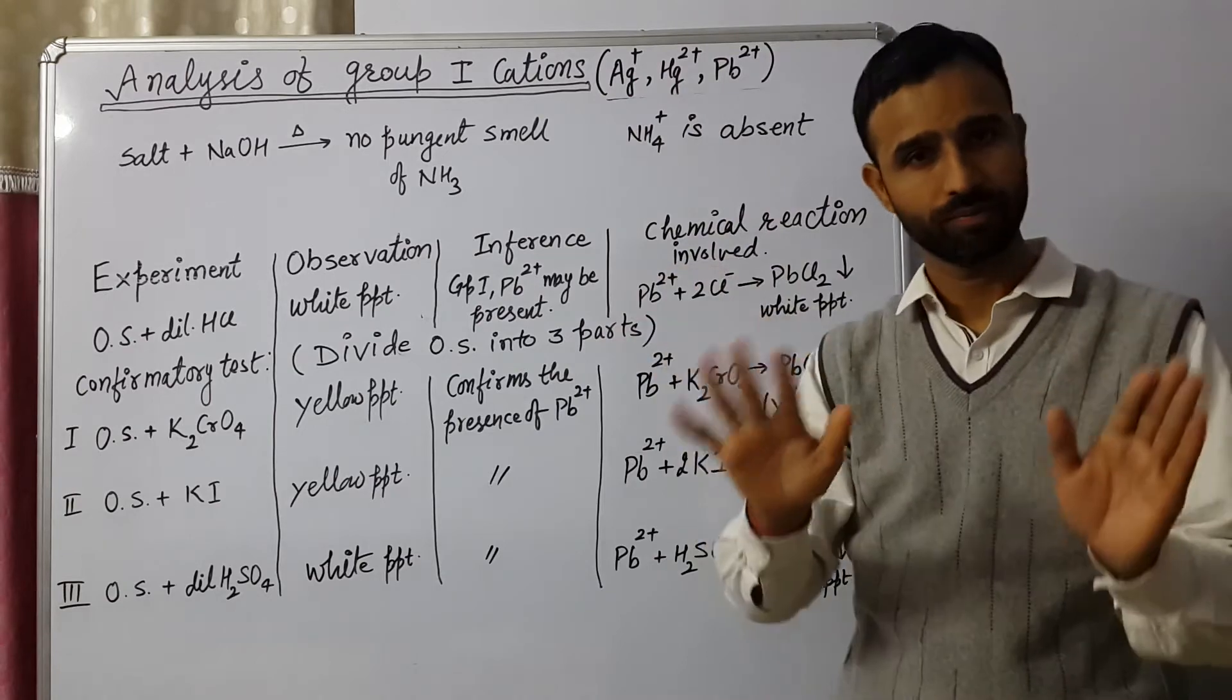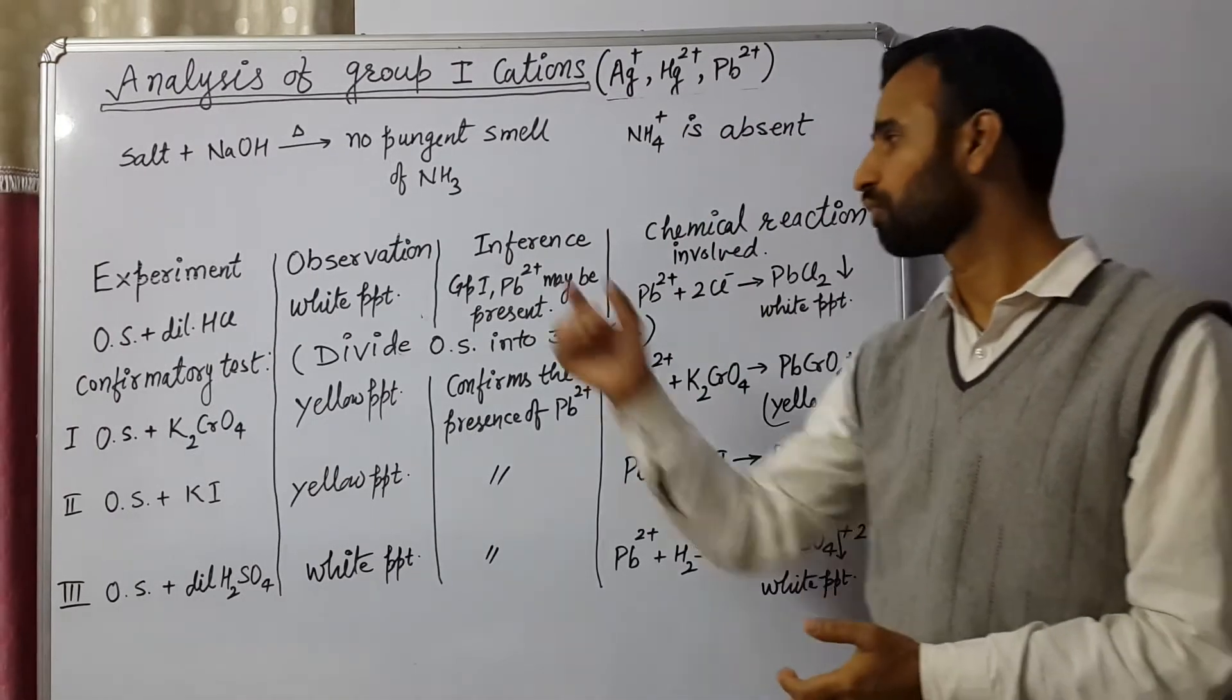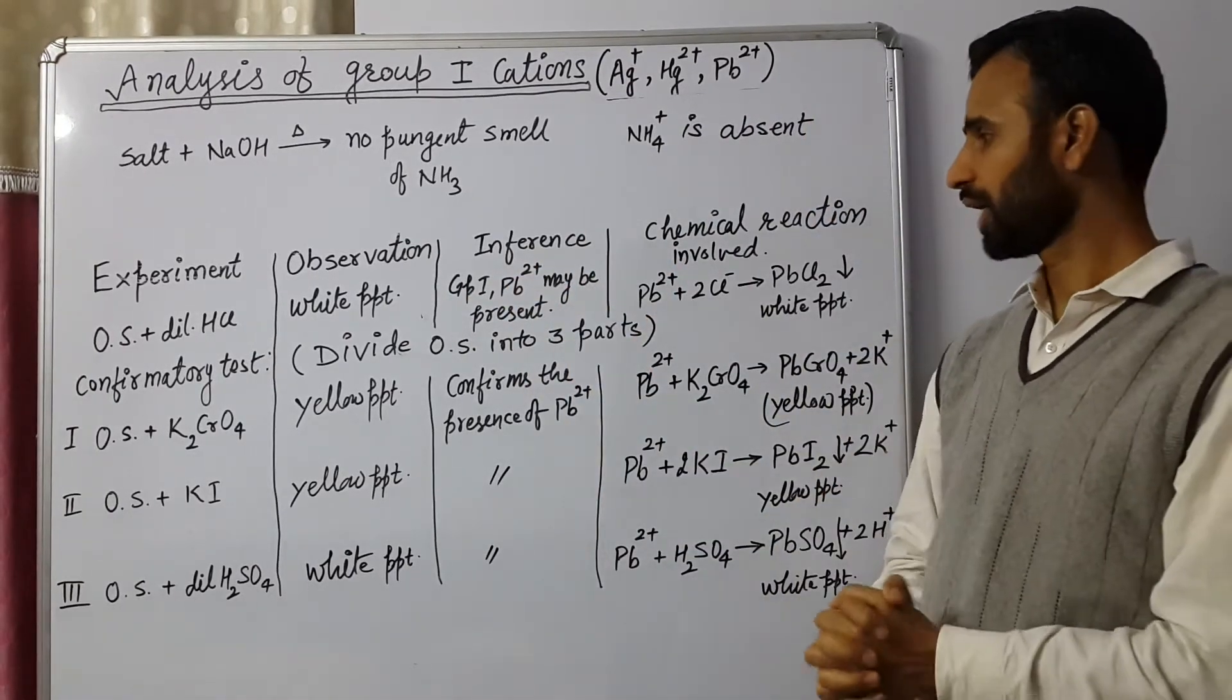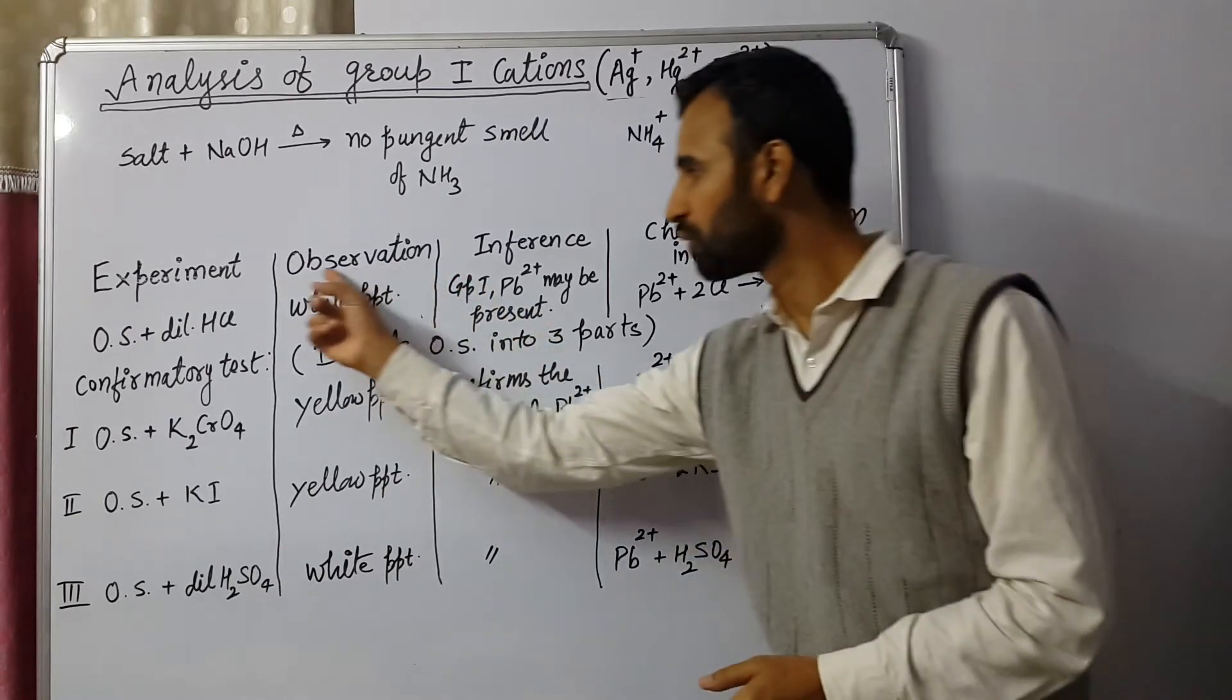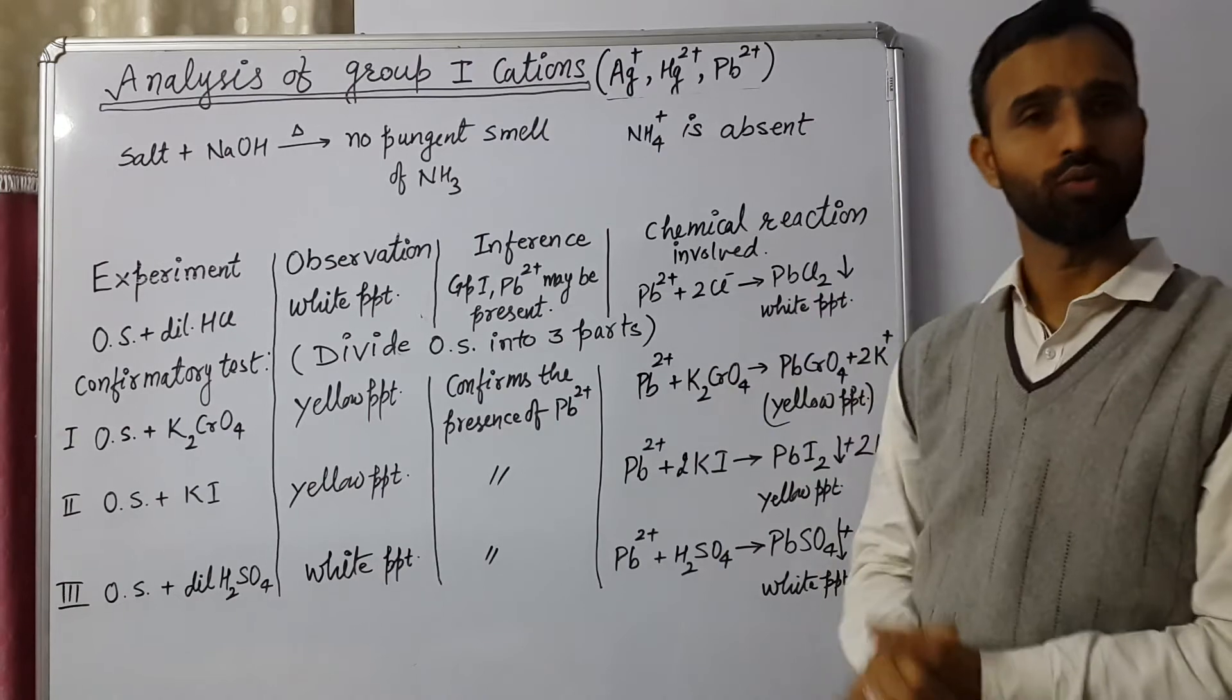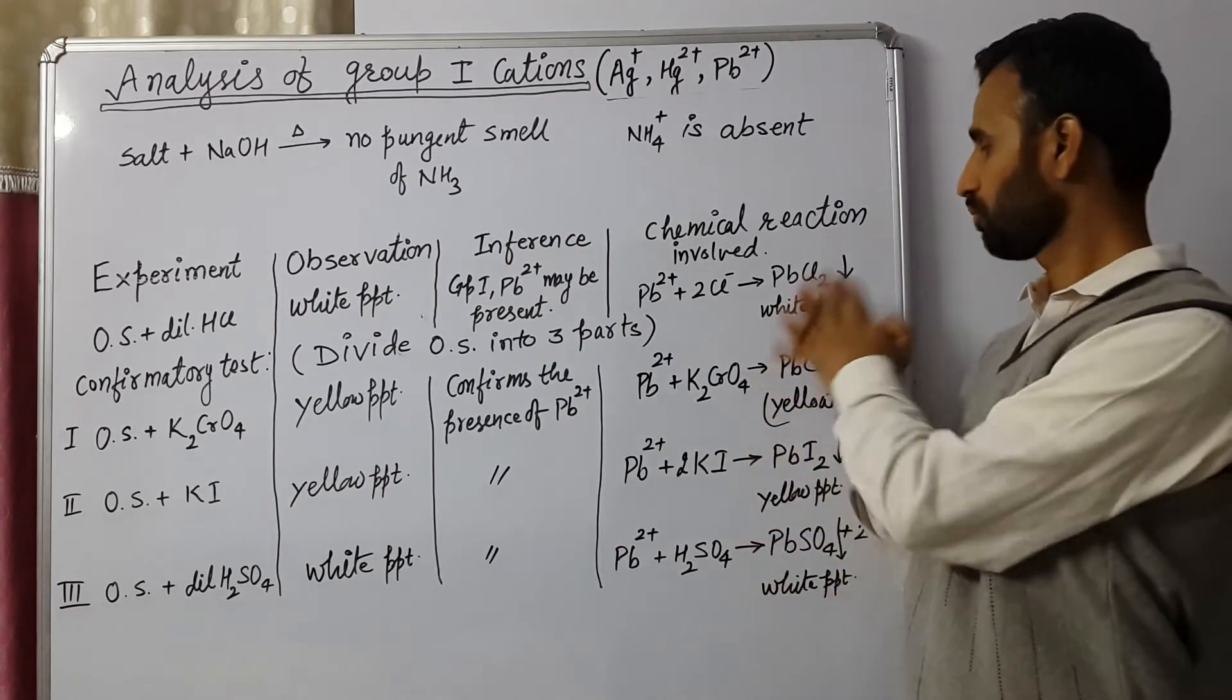silver and mercury is not given. So we are left with only Pb2+. That means group 1, Pb2+ may be present. And if Pb2+ is present, then we go for its confirmatory test. This white PPT is of PbCl2. Pb2+ reacts with Cl- ions and we get PbCl2 precipitates.